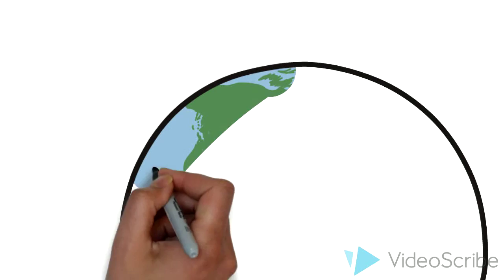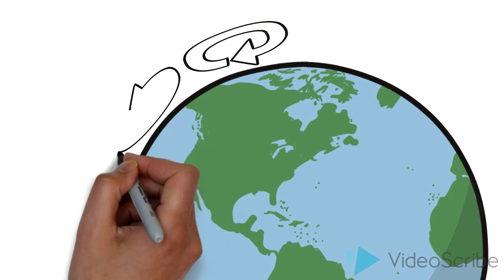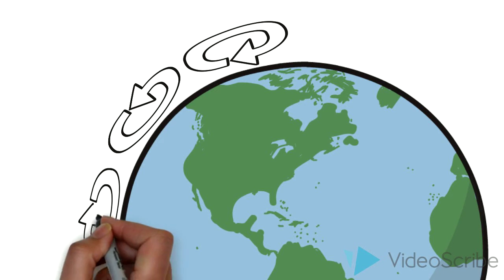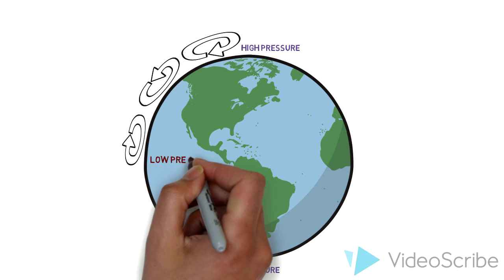The reason there are three different atmospheric cells in each hemisphere is due to these pressure differences running along the Earth. Instead of two high pressure zones at the poles and one low pressure zone running along the equator,